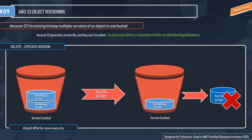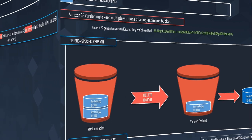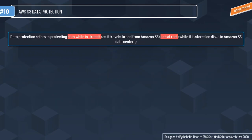To enhance security, you can also enable MFA — multi-factor authentication — to ensure you don't make accidental API calls. Now let's move on to S3 data protection. Data protection refers to protecting data while in transit as it travels to and from Amazon S3, and at rest while it is stored on disks in Amazon S3 data centers.